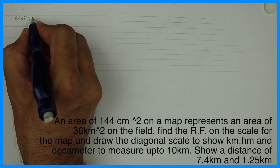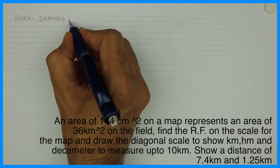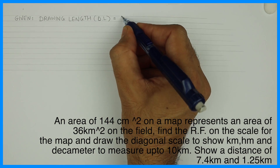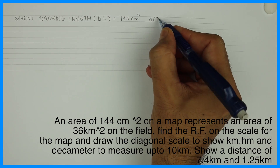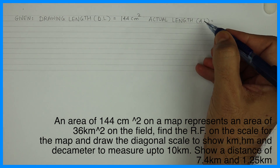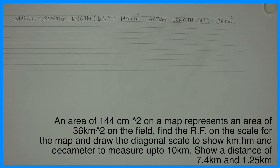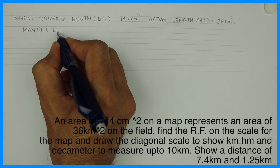First we will draw a guideline. After that we'll write the given data: an area of 144 centimeter square — that is the drawing length — represents an area of 36 kilometer square — that is the actual length. So we'll write drawing length 144 centimeter square and actual length 36 kilometer square. The maximum length given is 10 kilometer.